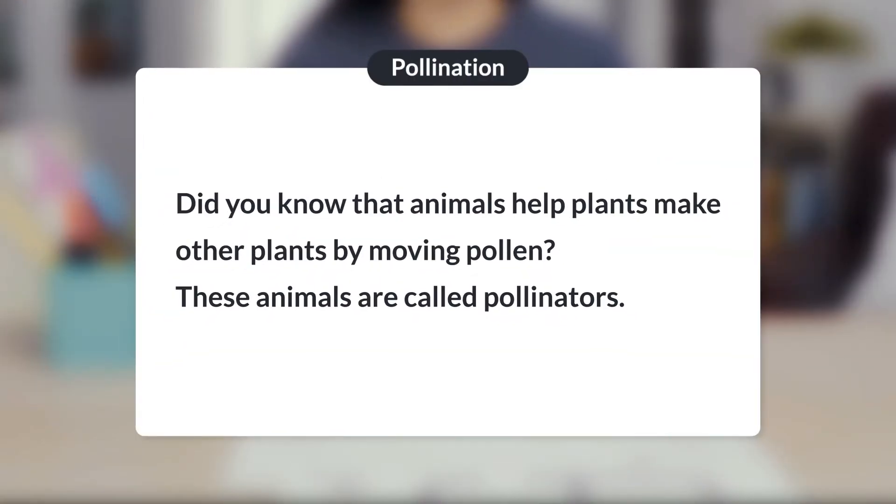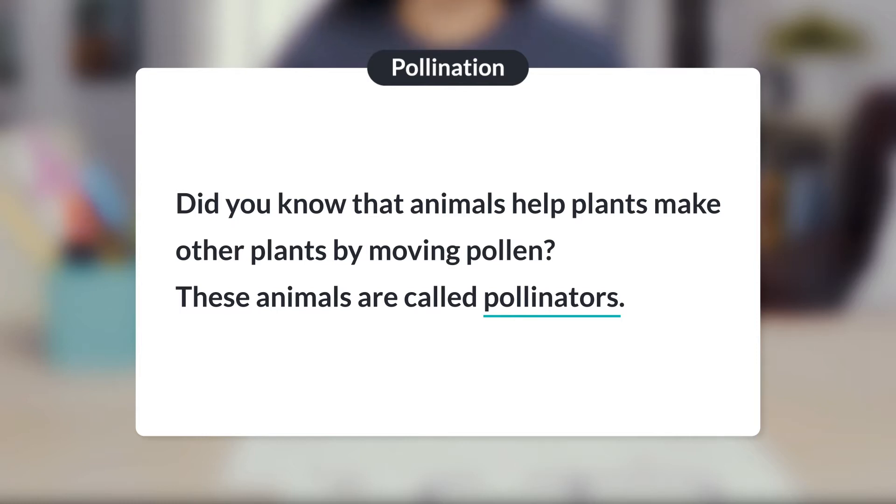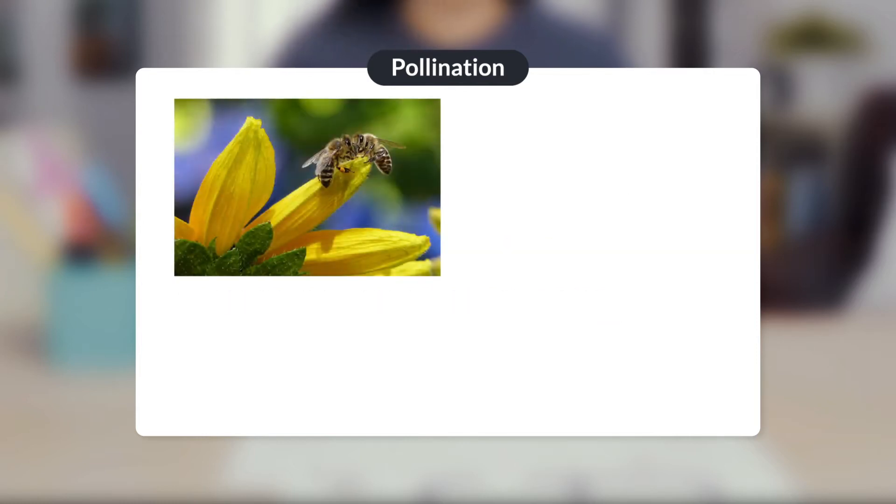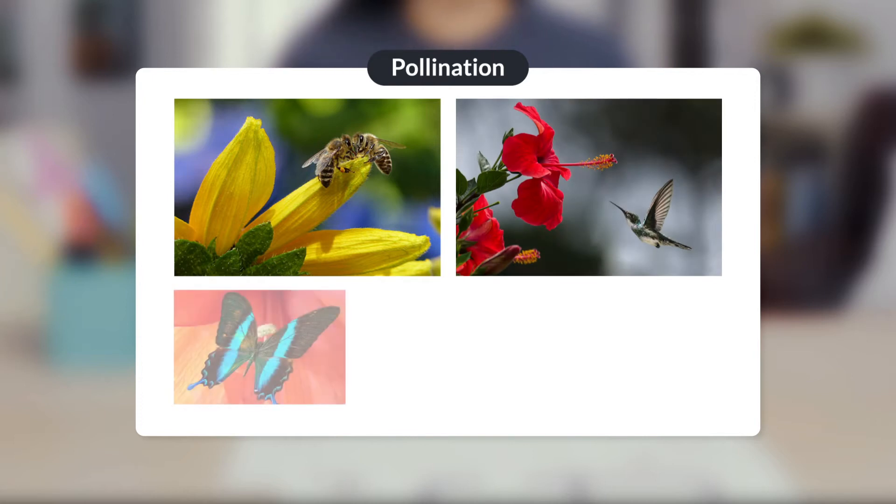Did you know animals help plants make other plants by moving pollen? These animals are called pollinators. Some common pollinators include bees, hummingbirds, butterflies, ladybugs, and bats.